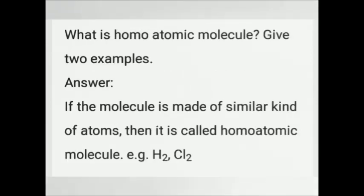There are two types of molecules: homoatomic molecule and heteroatomic molecule. What is a homoatomic molecule? If the molecule is made up of similar kind of atoms, then it is called a homoatomic molecule. Example: hydrogen molecule and chlorine molecule. In hydrogen molecule H₂, the two hydrogen atoms are the same, so it is a homoatomic molecule.